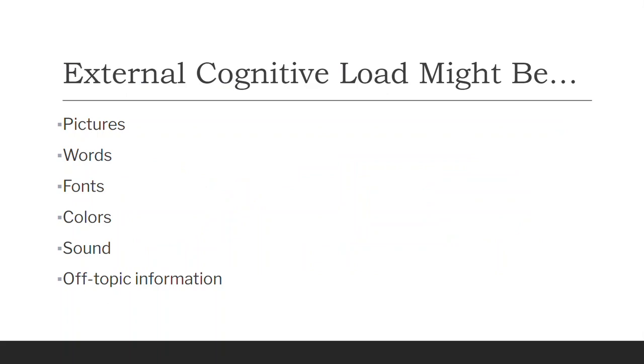We can have external cognitive load through pictures, words, fonts, color, sound, off-topic information. This doesn't mean we can never use these things. The way we use it can actually reduce cognitive load instead of increase it. But if we use extra stuff that's unrelated, we have to be aware that it might increase cognitive load, external cognitive load, making it more difficult to learn.